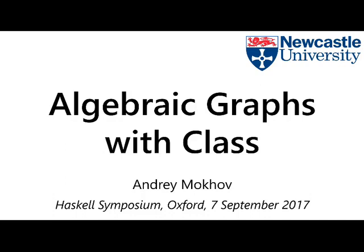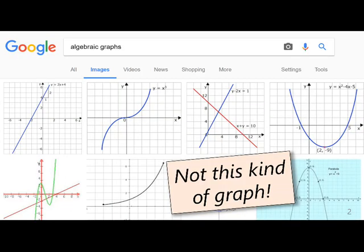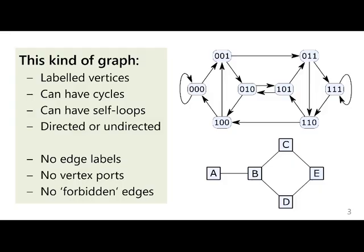Before I continue, I should clear up some possible ambiguity. If you search for algebraic graphs in Google, this is what you get. These are not the graphs I'm looking for, Google. I'm looking for these kind of graphs. We have vertices and edges, connections between vertices. And still, if you stick to that, there are also lots of different variations of graphs.